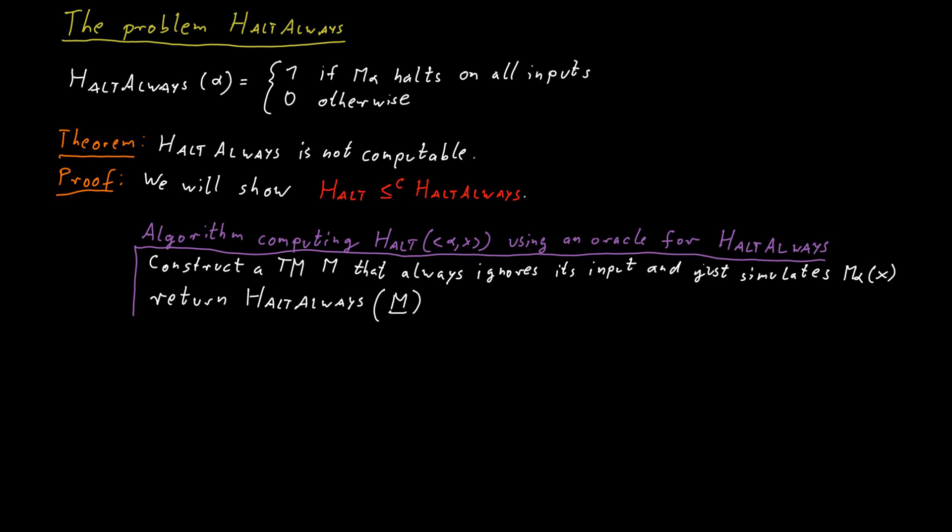So if HALT-ALWAYS of that machine is true, it means the machine always halts, which in particular means that M_alpha halts on X. And so we should return yes, M_alpha does terminate on input X.